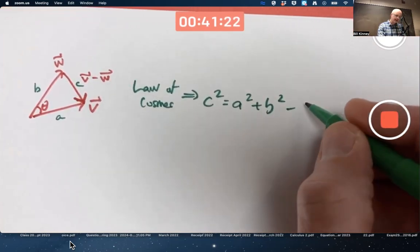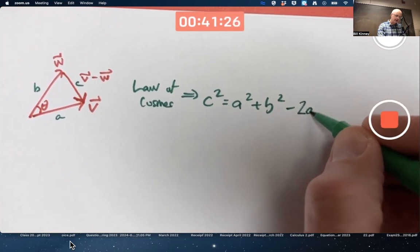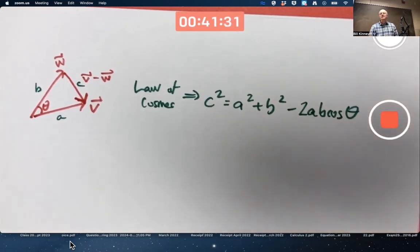So we have to subtract off something that'll make it work, even when it's not a right triangle. It turns out to be 2AB cosine of the angle. That is what the law of cosines says.